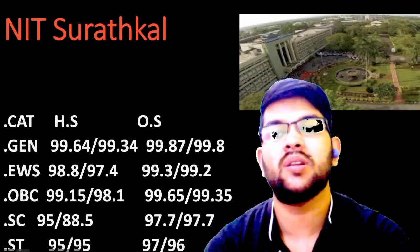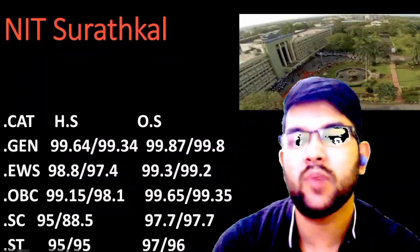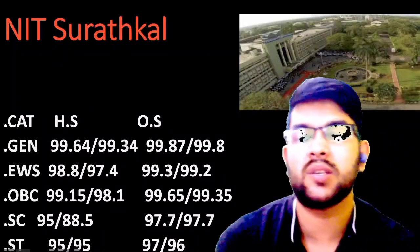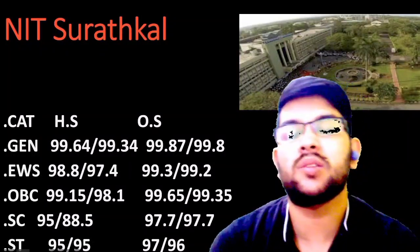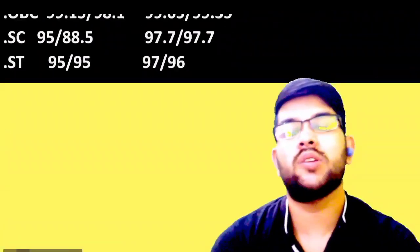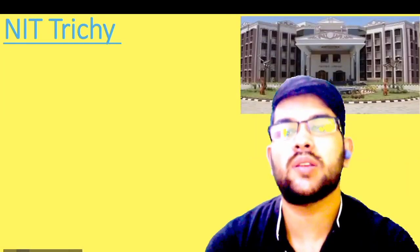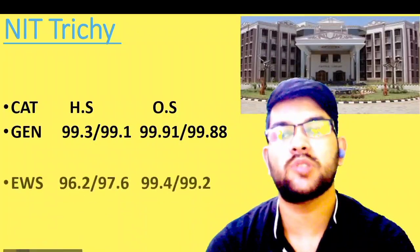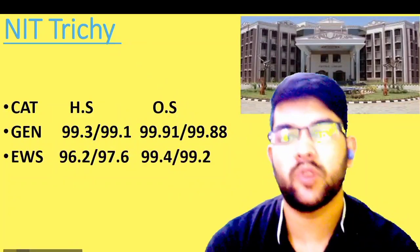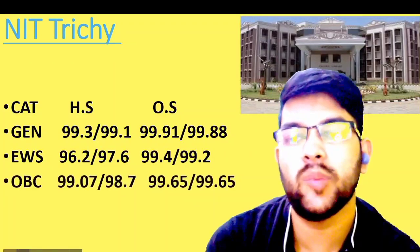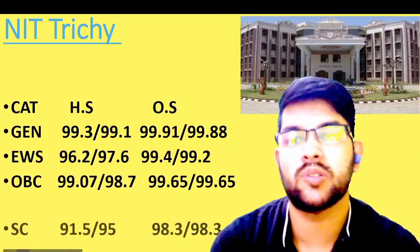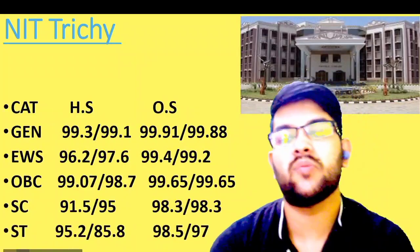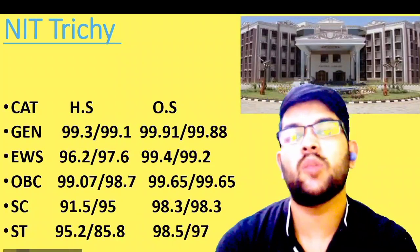Next is NIT Surathkal. Here is the information. For general: 99.64 and 99.87. For EWS, OBC, SC, ST, male, female, home state, and other state, you can check sideways. Finally, the number one NIT — NIT Trichy. Here is the information. For general: 99.3 and 99.91 — home state and other state. For EWS: 96.2 and 99.4. For OBC: 99.07 and 99.65. For SC: 91.5 and 98.3. For ST: 95 and 98.5 percentile.